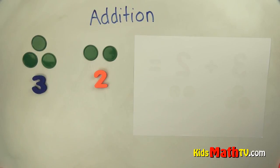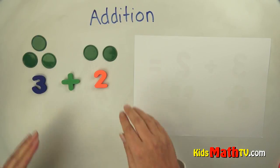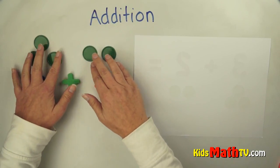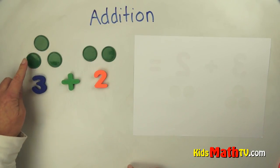We want to add them together. This is the addition sign. This means to put them together. So if I put them together, I add the two and the three.